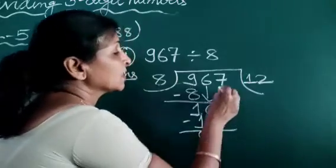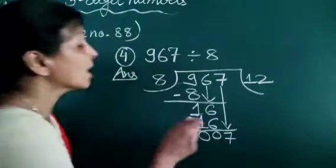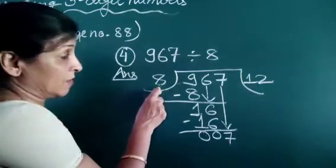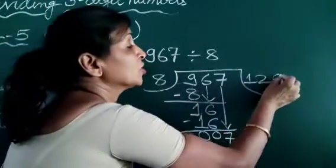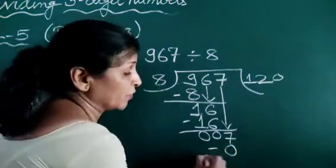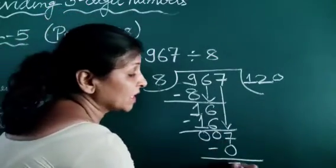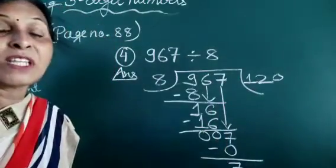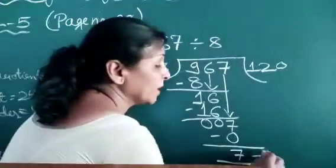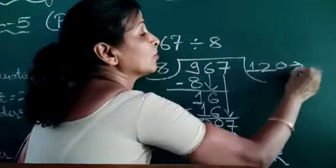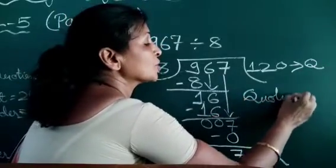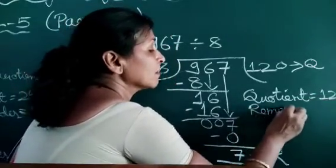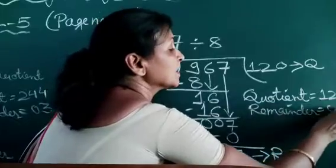Again subtract it — then 0 comes. Then we write this next digit here. Now you see this digit is smaller than the divisor, so we write 0 here. 8 zeros are 0 — 0 times it goes. Then subtract it — then 7 comes. And here is no digit, so we cannot write it here. 7 is our remainder and 120 is our quotient. Quotient is equal to 120 and remainder is equal to 7.